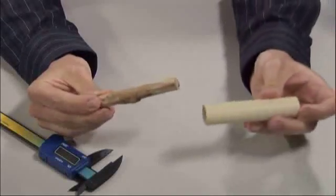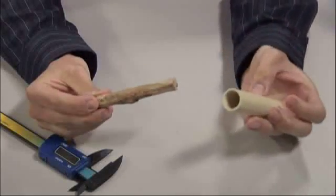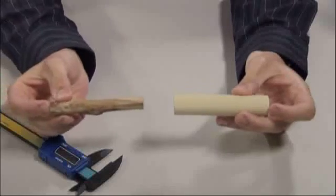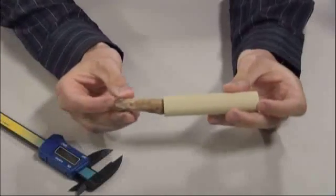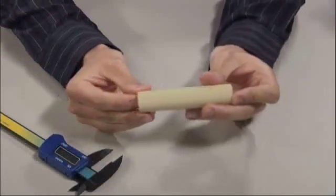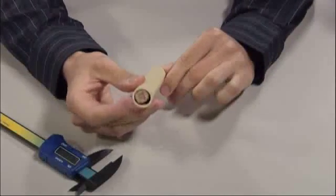Well then what we have is we have a mating envelope and this mating envelope can be simulated by this, a go gauge, and now we take the part and we can put it in here as an inside the go gauge and it has to fit inside of this go gauge.